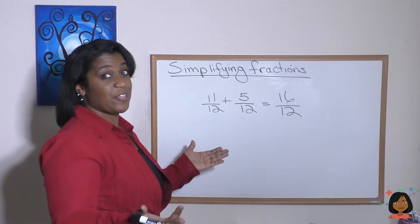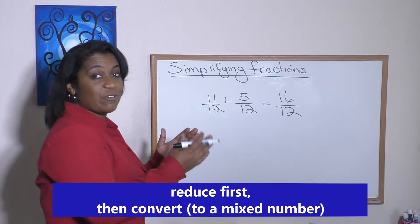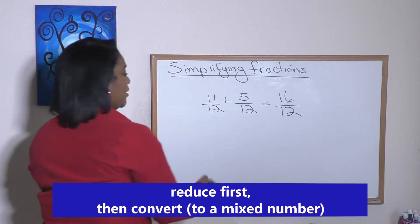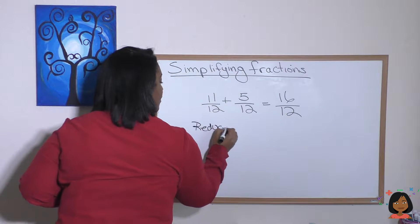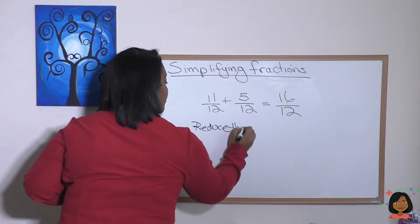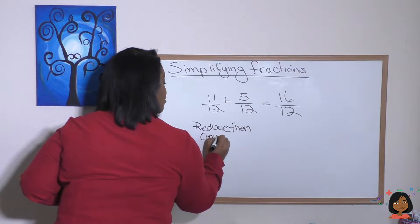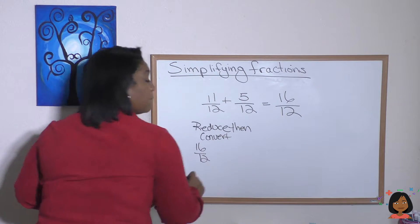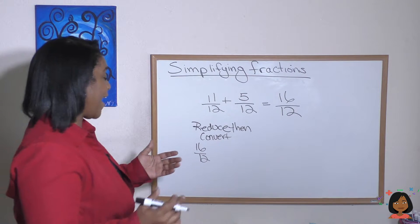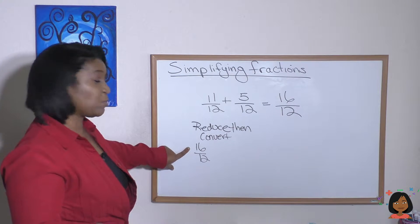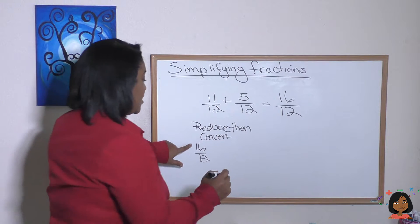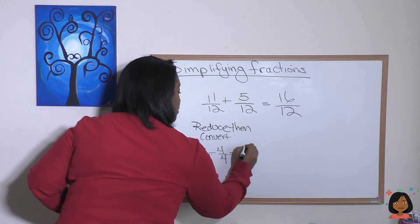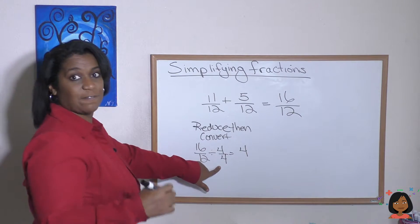So method number one, we can reduce first and then convert. Here's what I mean. Reduce, then convert. Let's reduce 16 twelfths by a common factor. Let's see. Two goes into both of these, but also four goes into both of these. 16 divided by four, and let's write it the long way, equals four. 12 divided by four equals three.